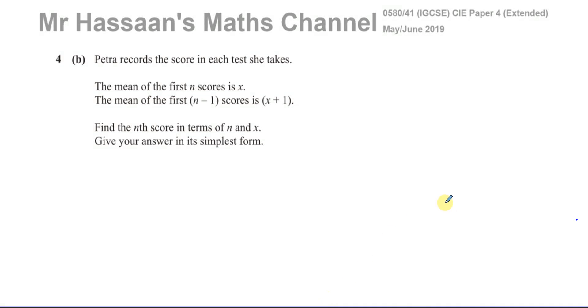Welcome back to Mr. Hassan's Maths Channel. I'm now answering question number 4, part B, from the May-June 2019 IGCSE paper 4 variant 1 from Cambridge. This is from the 0580 syllabus. This question is about averages, mean, and statistics.